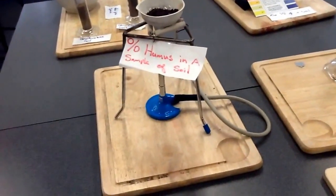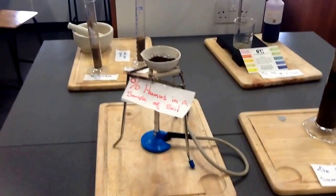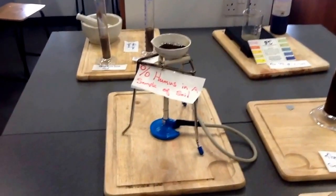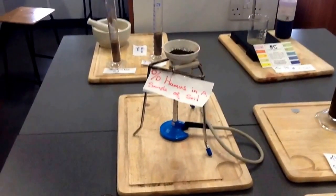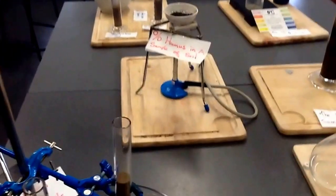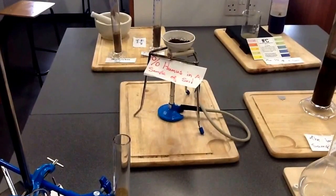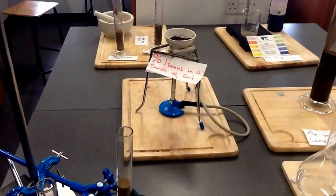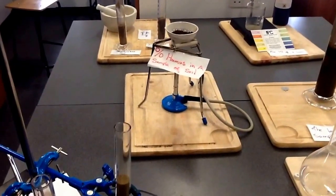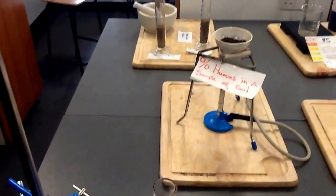We weigh the crucible first, then weigh the sample of soil. Then we burn the soil and when there's no glowing left we calculate the reduction in the weight of the soil and then we work out our percentage humus. Our percentage humus is the loss in weight over the overall weight of the soil and we multiply by 100 over 1 will give us our percentage.